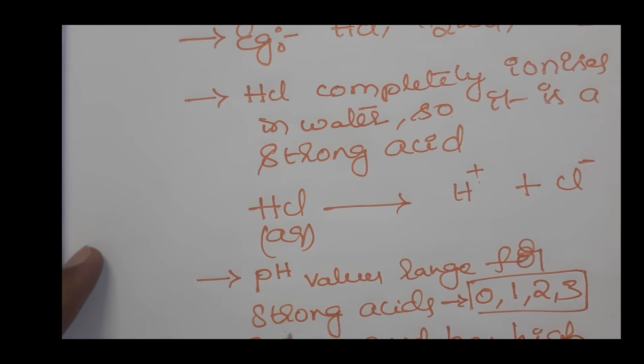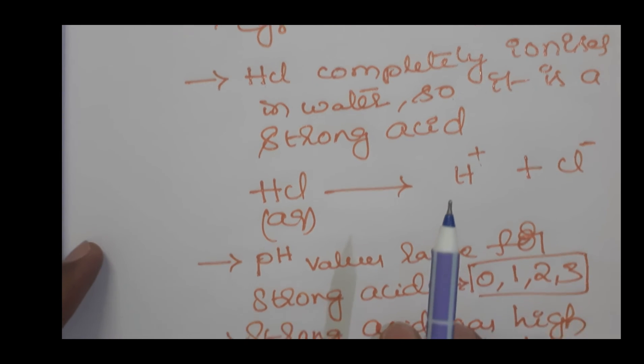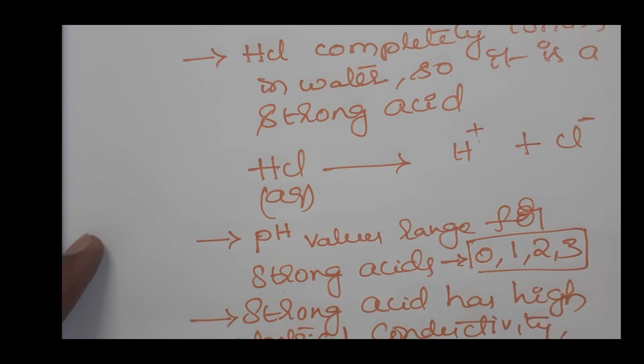The pH values range for strong acids is 0 to 3, that is pH values 0, 1, 2, and 3. What pH is and what the pH scale is will be explained in coming videos.